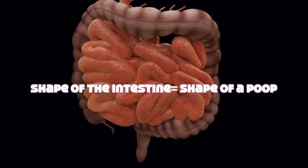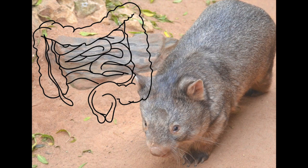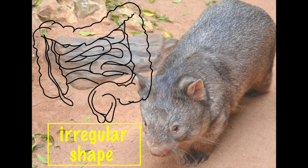The shape of the intestine will affect the shape of the poop. The wombat intestines had a much more irregular shape in two distinct ravine-like grooves where the intestine is stretchier.